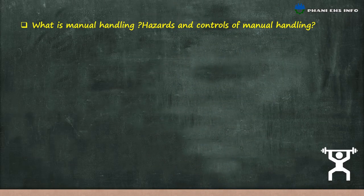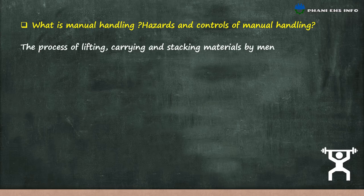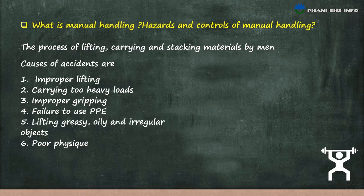What is manual handling and what are the hazards and controls? The process of lifting, carrying and stacking of material by men is called manual handling. The causes of accidents in manual handling are improper lifting, carrying too heavy loads, improper gripping, failure to use PPE, lifting greasy, oily or irregular objects, and poor physique.